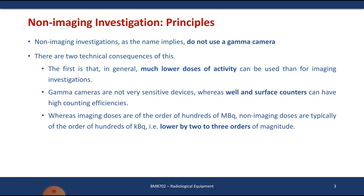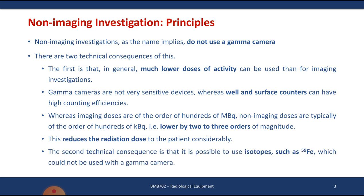In terms of dose magnitude, the gamma camera operates in megabecquerels — becquerel being the unit of radioactivity — whereas non-imaging techniques operate in kilobecquerels, which is two or three orders of magnitude lower. This significantly reduces radiation dose to the patient. Another advantage is that we can use different isotopes, such as Fe-59, which are not used in gamma camera imaging.